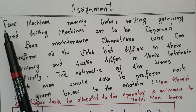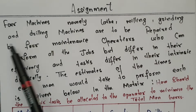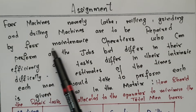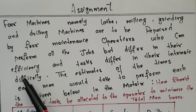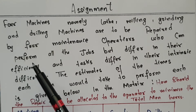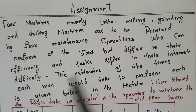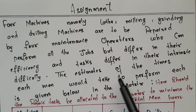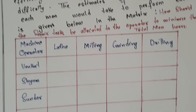Here the question is given: machines namely lathe, milling, grinding, and drilling are to be repaired by four maintenance operators who can perform all the jobs but differ in their efficiency. Given the estimated total time each man would take to perform each job, how should the repair tasks be allocated to minimize the total man hours?